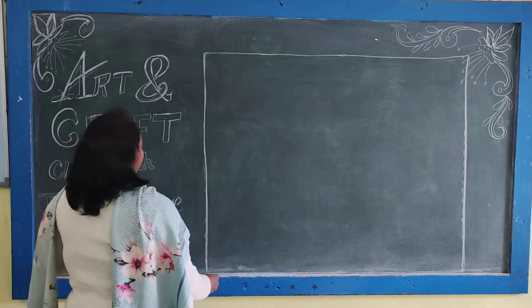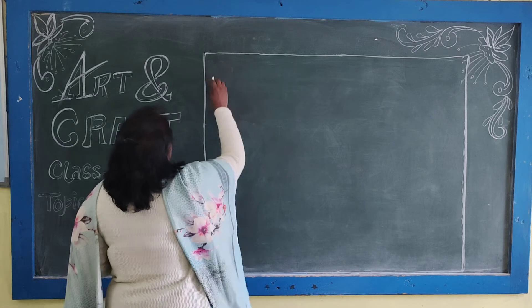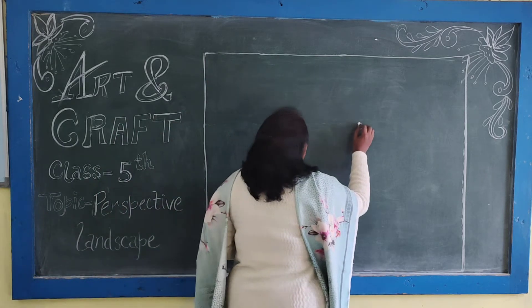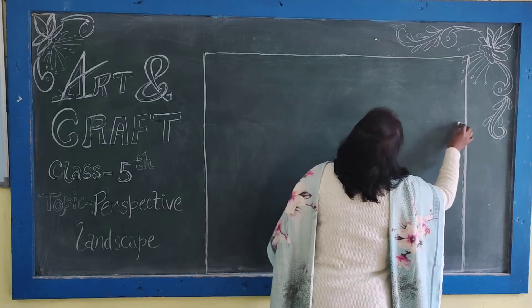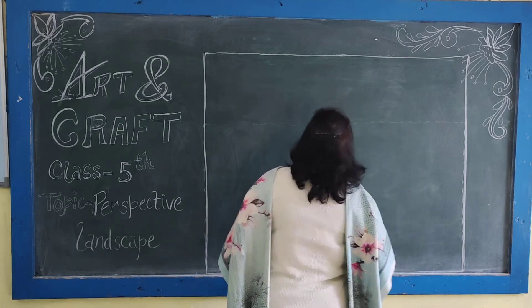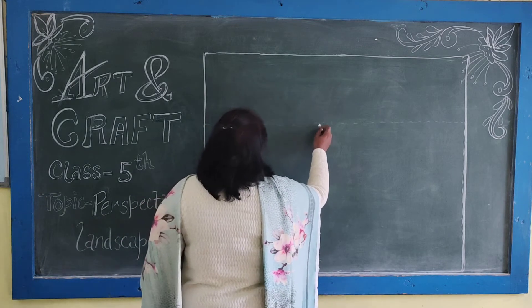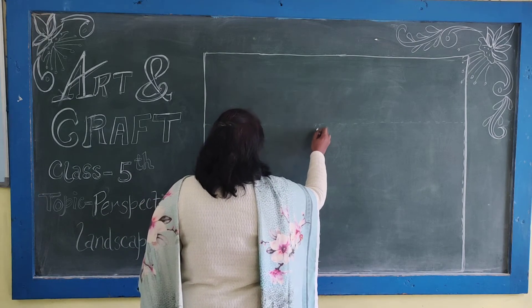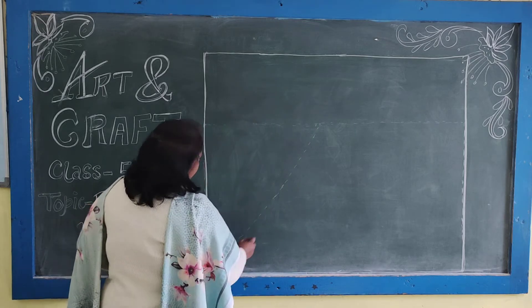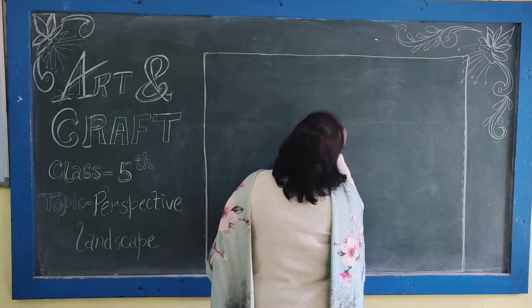At first, take some distance on your sheet. Use a portion to draw five pieces. Now draw a triangle shape at the bottom of your sheet.